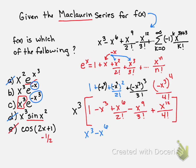x cubed times negative x cubed is negative x to the sixth. One more distribution. Positive x to the ninth over 2 factorial plus,